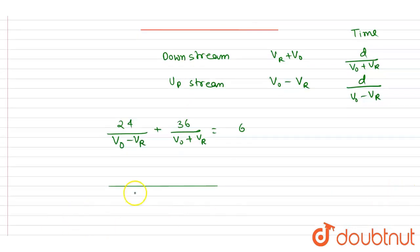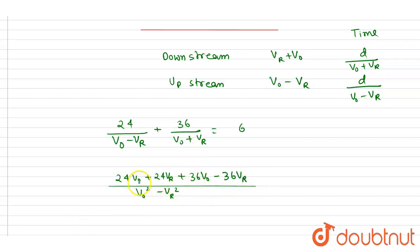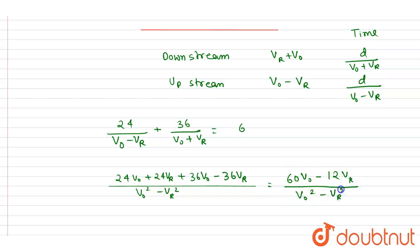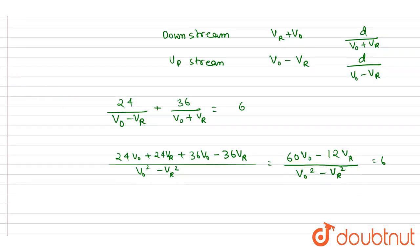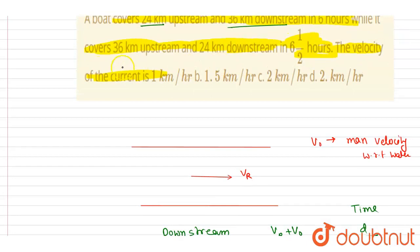Taking the LCM, the first equation becomes: (24 v-naught + 24 vr + 36 v-naught minus 36 vr) divided by (v-naught squared minus vr squared) equals 6. Simplifying: 60 v-naught minus 12 vr, divided by (v-naught squared minus vr squared), equals 6.